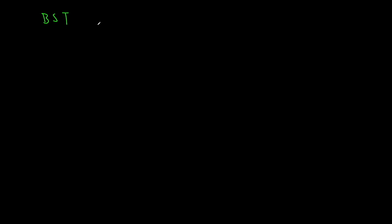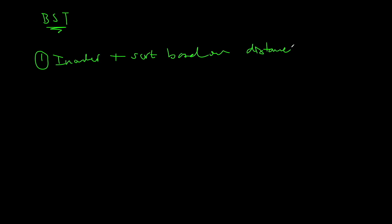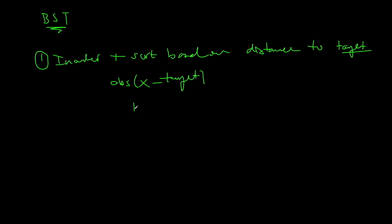So we have a binary search tree and we're looking for the k closest values to a certain target. In our first approach, we do an in-order traversal of the tree, which gives us all values in sorted order. Then we sort the array based on distance to the target — using absolute value of current value minus target — and return the first k elements. Unfortunately, in-order traversal is O(n) but the sort is O(n log n), making the total time complexity O(n log n).